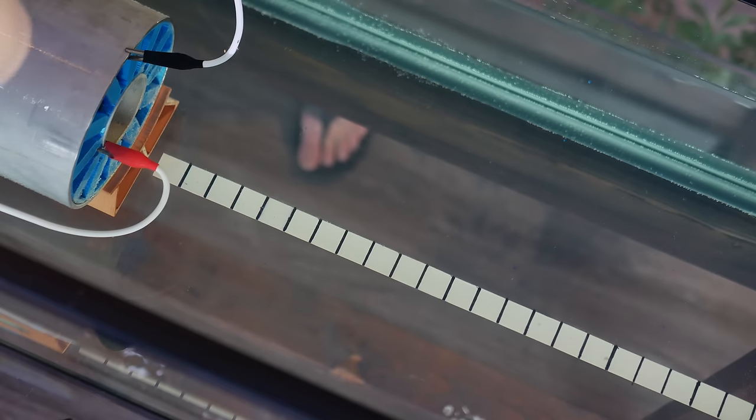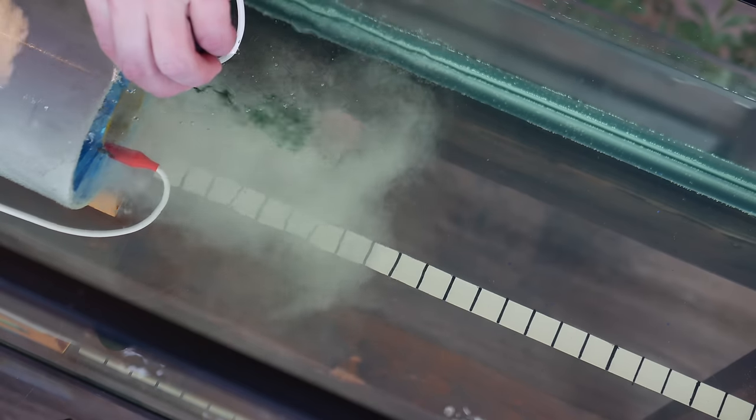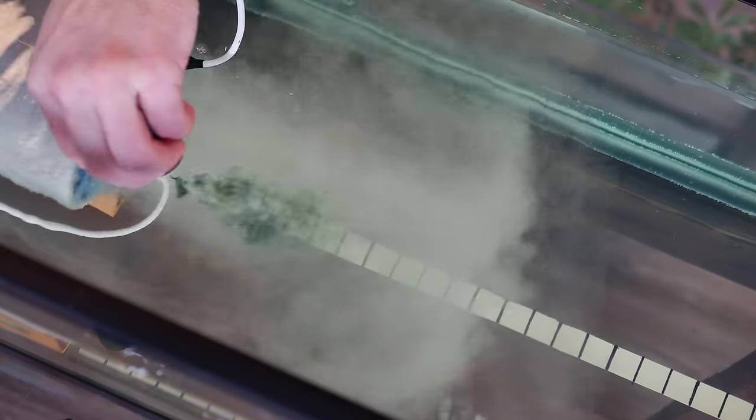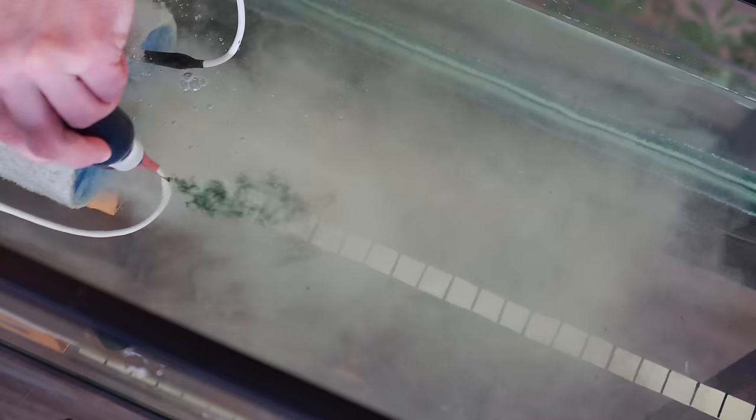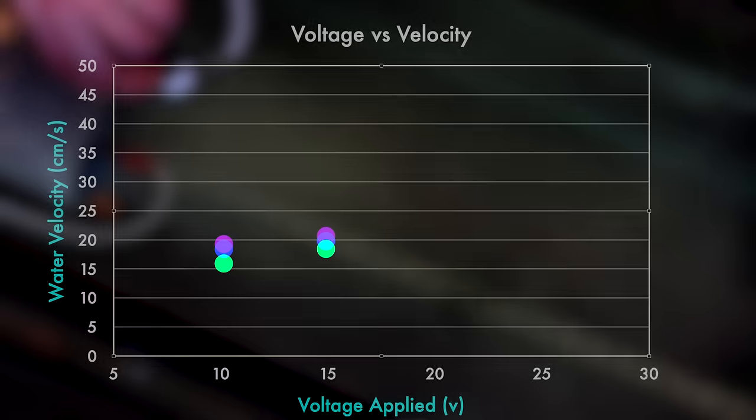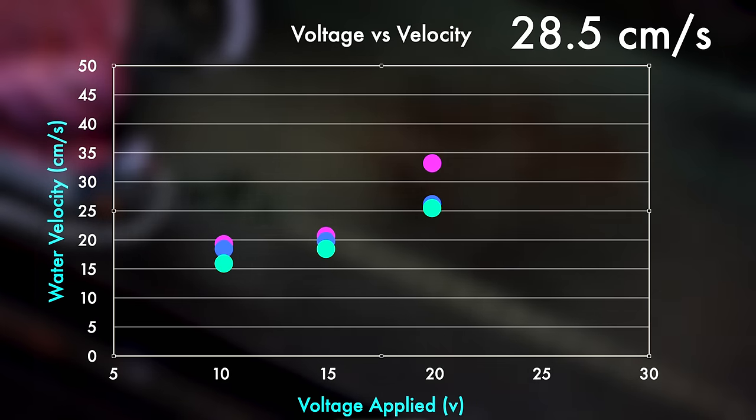Let's hit 20 volts. And... Oh! Look at that column of water! You can definitely see that column of water moving. Faster velocity still. This time, the average output was 28.5 per second.